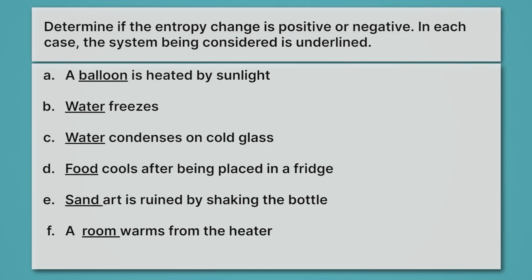Let's review the answers. For A, a balloon is heated by sunlight — that means the balloon is increasing in temperature, and so the entropy is going to increase. For B, we have water freezing. Remember, that means it's going from a liquid to a solid — from liquid, which is relatively high in entropy, to a solid, which is relatively low in entropy.